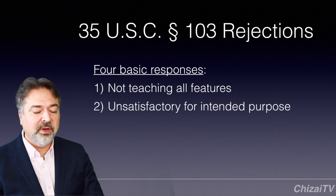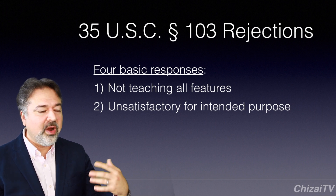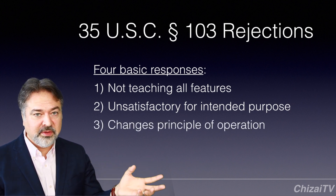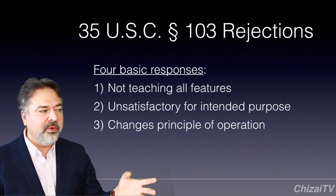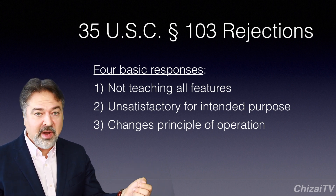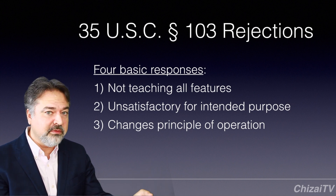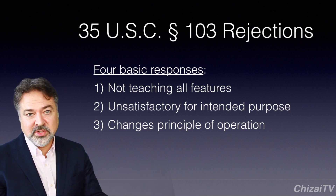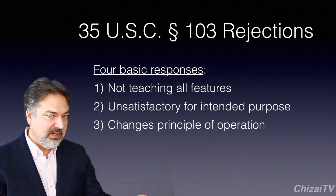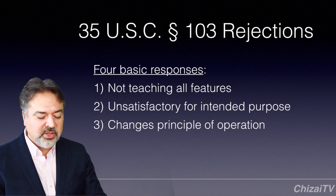The first of the remaining arguments is unsatisfactory for intended purpose. This means the combination of references, the way the examiner combines them, makes the primary reference unsatisfactory for its intended purpose. Another argument is that the principle of operation will change. For example, if the primary reference is an AC device and the examiner combines that with a DC device, suggesting to change the primary reference from AC to DC, that changes the principle of operation. The device may continue to work, but it will now be a DC device and the principle — working off direct current — will be changed.